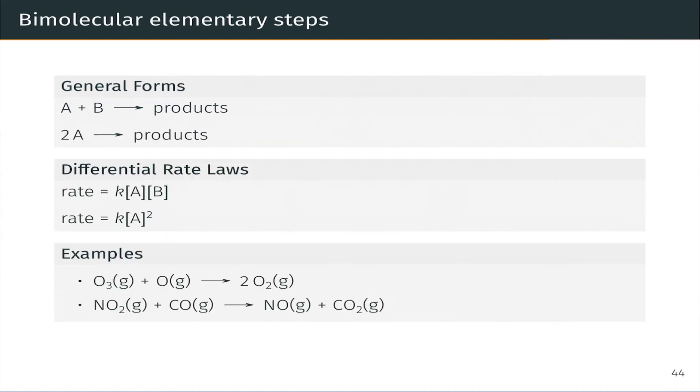Bimolecular elementary steps may have a form like A plus B going to products or 2A going to products, and the corresponding differential rate laws are shown here, making this point again that if we know the form of the elementary step, we can use the stoichiometric coefficients in the elementary step to infer the differential rate law for that step.